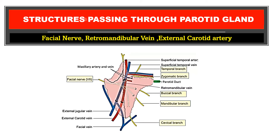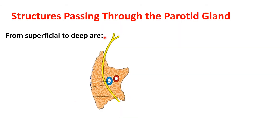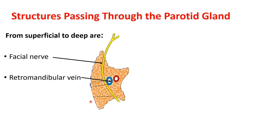This video is on structures passing through the parotid gland. There are three structures which pass through it. From superficial to deep they are: first, the most superficial structure is the facial nerve; next is the retromandibular vein; and the third is the external carotid artery.